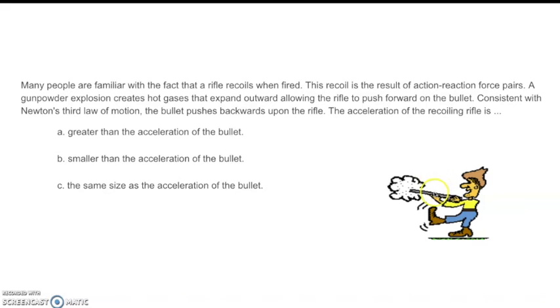Well, the forces are the same, but the bullet has such a small mass that its acceleration is so big, while the mass of the gun, or rifle in this case, is so small, I mean the mass is so big that the acceleration is so small. So the answer is B. The acceleration is way less than that of the bullet.